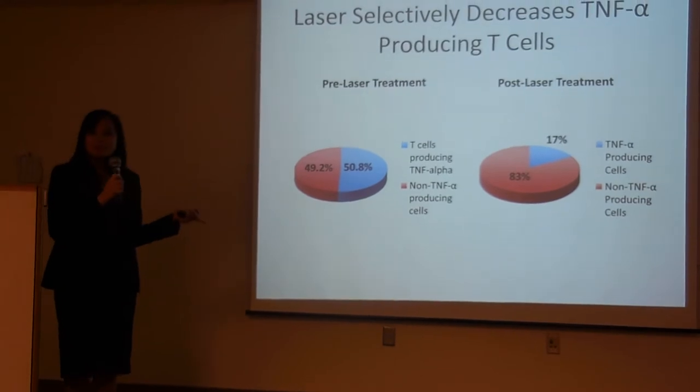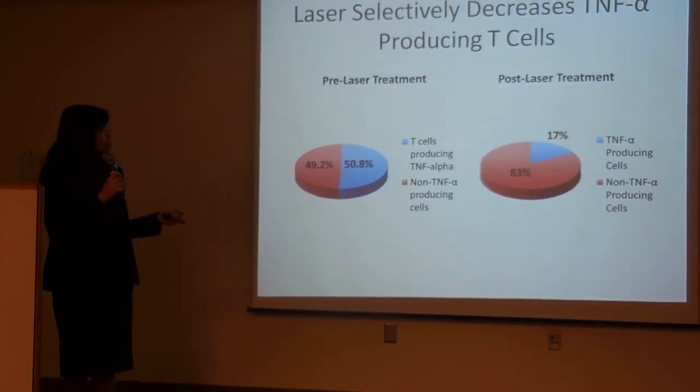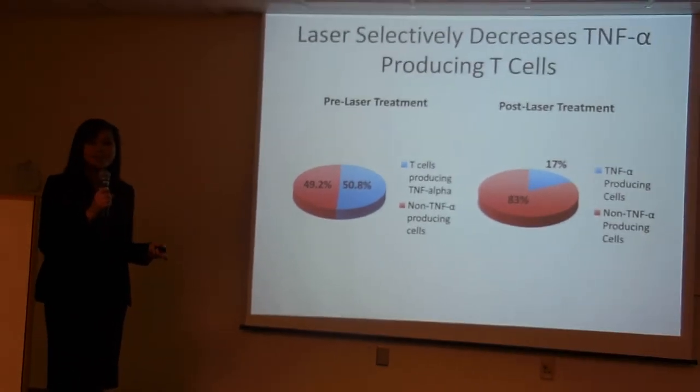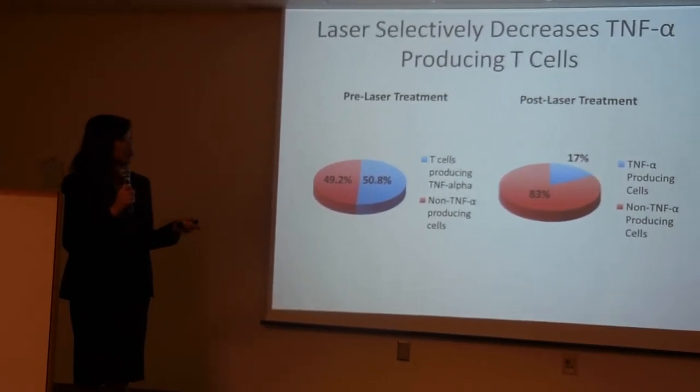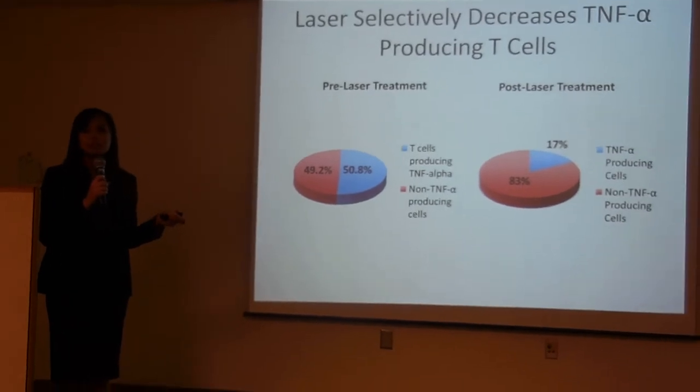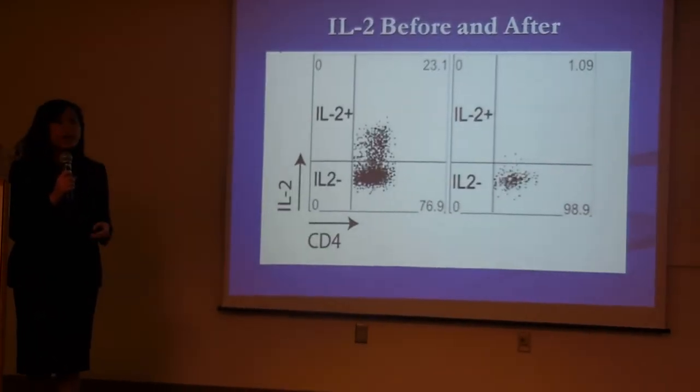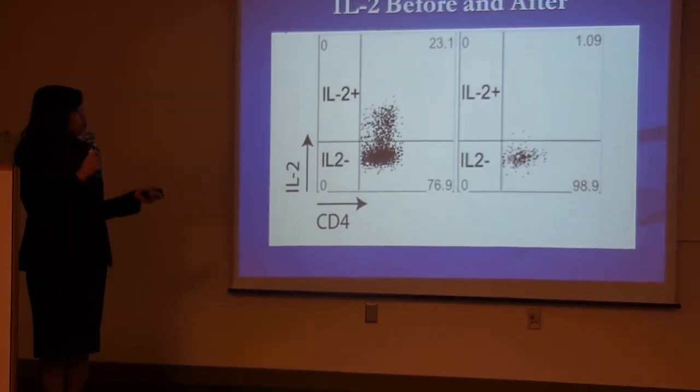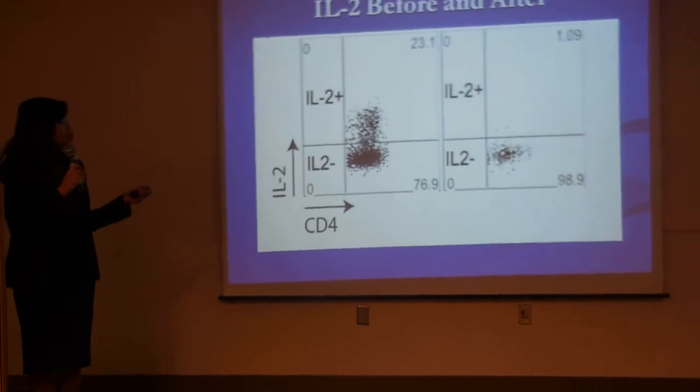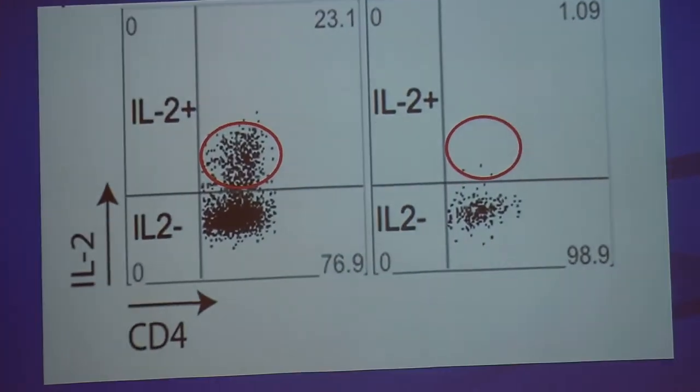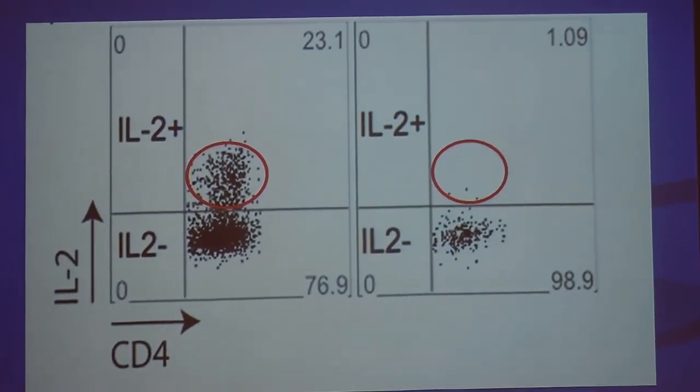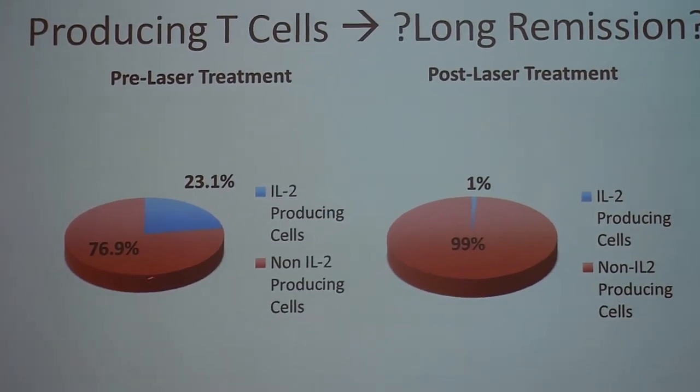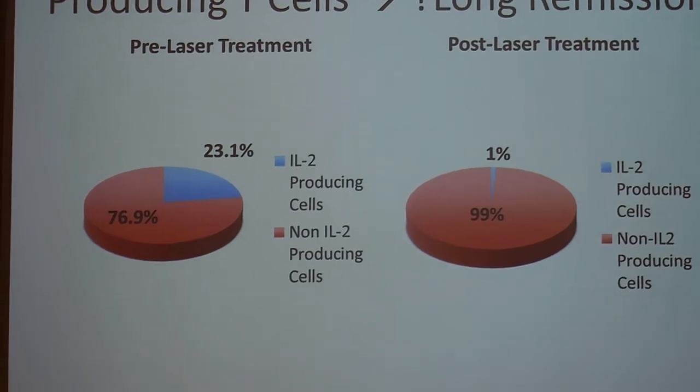So you can also see these results in the pie chart. And so before treatment, there's about a little bit over 50% of TNF-alpha-producing T cells. And after the laser treatment, this was greatly reduced to only 17%. So similarly with IL-2-producing cells, you can see that before treatment, there's a much greater number. And after treatment, it's almost completely wiped out. And you can see it here in the pie chart that it was decreased from 23% to only 1%.